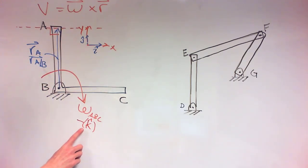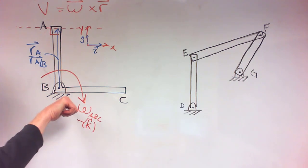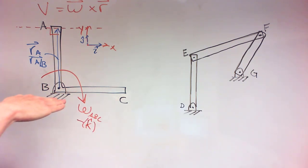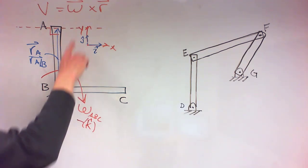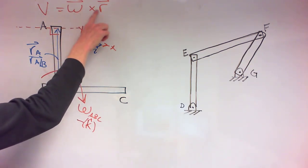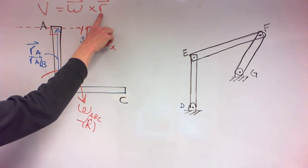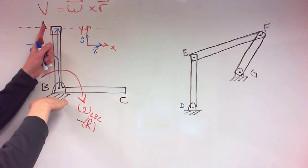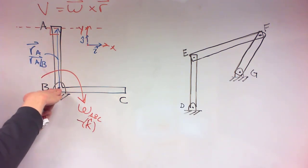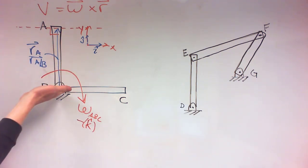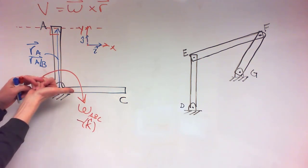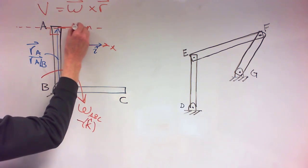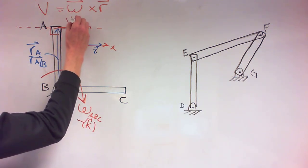Our omega is in the negative k-hat — going into the board. The method I like to use is to slide my fingers along the first vector and curl them into the second vector. My fingers are going into the board, my r vector is going upwards, so I try to curl my fingers upwards. That doesn't work, so I turn my hand over — now they curl upwards and my thumb goes to the right. Therefore VA is going to the right, perpendicular to r.